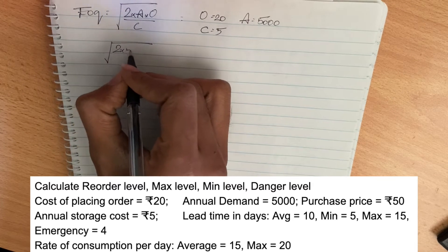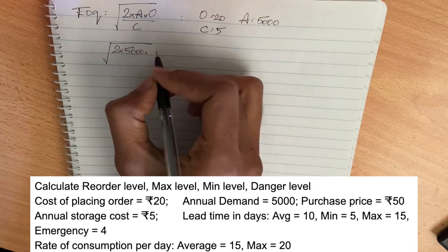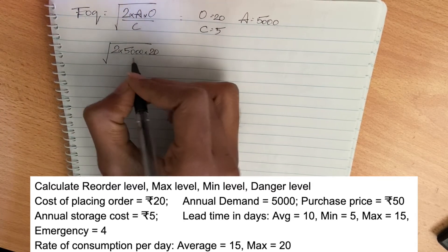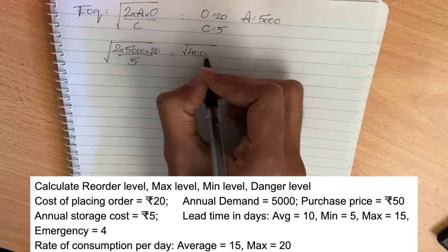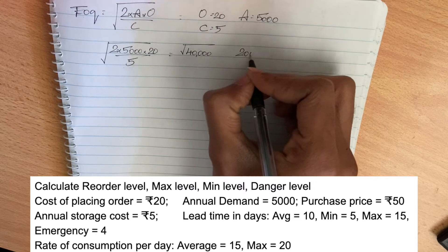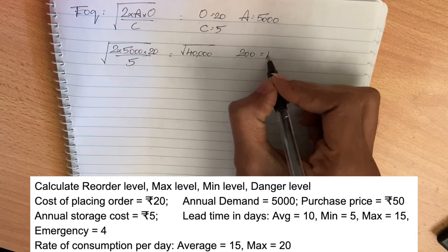2 into 5000 into 20 divided by 5. This is the square root of 40,000, so it is equal to 200. So 200 is the economic ordering quantity.